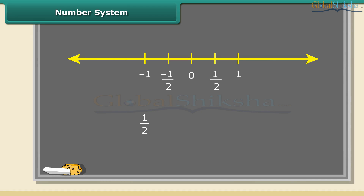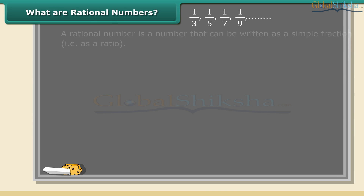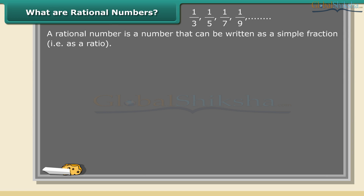Students, what about 1 by 2? Is it a whole number, natural number, or an integer? You can see 1 by 2 lies between 0 and 1 — we call it a rational number. A rational number is a number that can be written as a simple fraction, that is, as a ratio. So a rational number looks like p upon q.